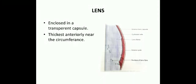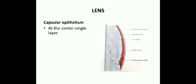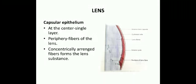The capsule is thickest anteriorly near the circumference, and below it there is a capsular epithelium — a single layer at the center of the lens. Towards the periphery, these cells elongate to form the fibers of the lens, which are concentrically arranged to form the lens substance. In the center, the older fibers form the nucleus, while the periphery contains newer, softer fibers called the cortex.